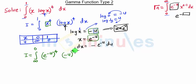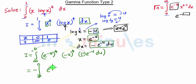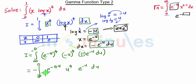Log x is minus u, the whole raised to 4, times dx, and dx is minus e raised to minus u, du. Taking the minus sign outside the integration, we get minus integration from infinity to 0 of: e raised to minus u the whole raised to 4, which is e raised to minus 4u, and minus u the whole raised to 4, which is u raised to 4, times e raised to minus u, du.